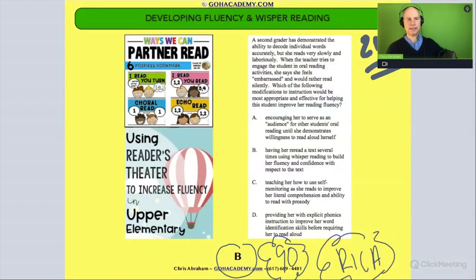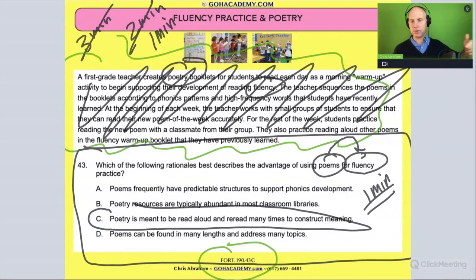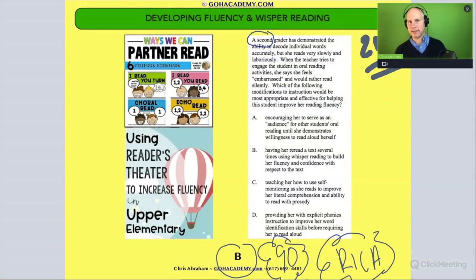It's a great question. It says here a second grade student—and by the way, I'm going to circle second grade. The newer exams throw out scenarios where students are in first grade with fluency; the older exams it's more second grade with fluency. A second grade student has demonstrated the ability to decode individual words accurately, but she reads very slowly and laboriously. We have this second grade student, seven or eight years old. She's able to decode with accuracy, wonderful, however she's very slow.